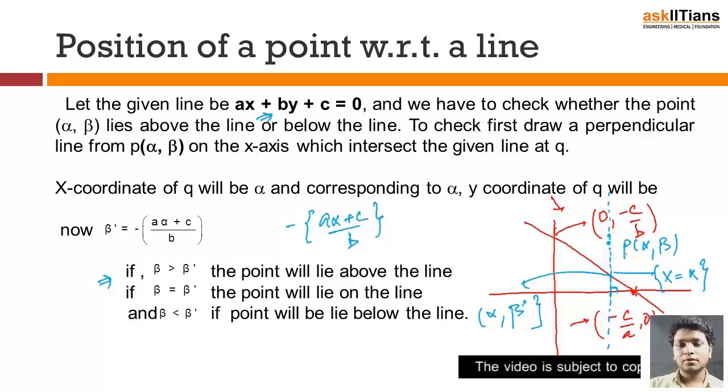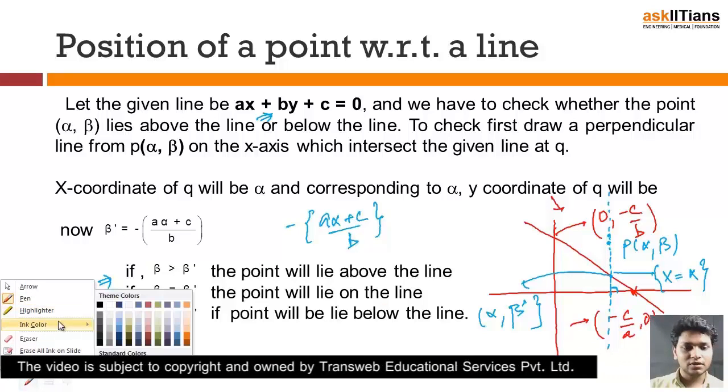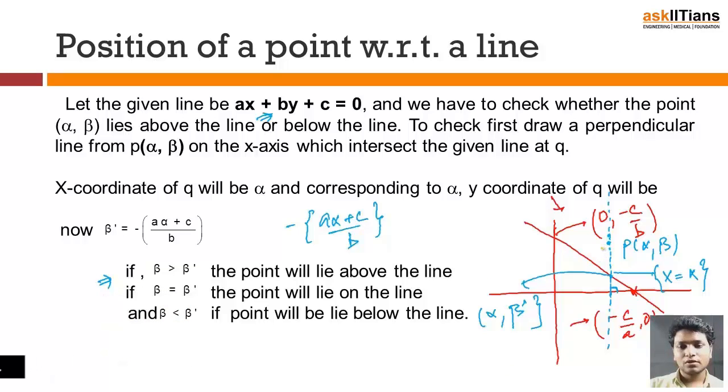Now the comparison is very simple. If the beta which is given is greater than the beta prime, the geometry will tell you that point P is going to lie above the line. If this is going to be the condition, the point is going to lie above the line.